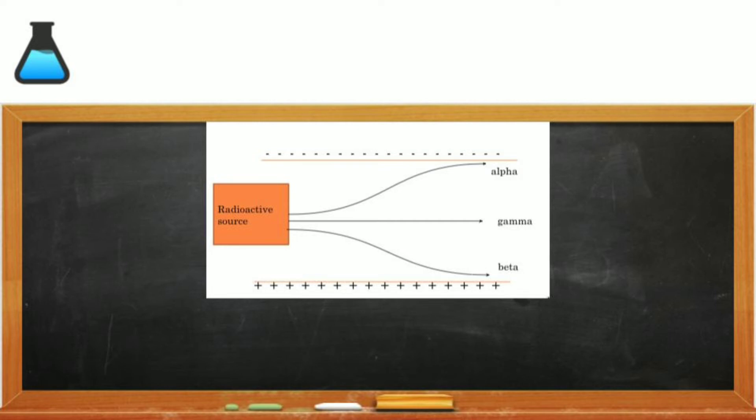Because some nuclear particles are charged, they will be affected by magnetic fields. An alpha particle, which is positive, will always be attracted to a negative field, and a beta particle, which is negative, will always be attracted to a positive field. A gamma ray is unaffected because it has no charge.